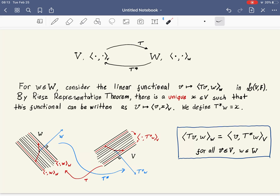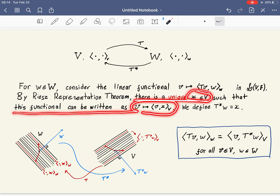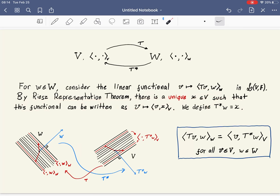And by Riesz Representation Theorem that we saw before, there is a unique vector x in V, such that this function now can be written like this. It maps a vector v into the inner product between v and x. This unique vector x that exists by Riesz Representation Theorem, we define T star w, where T star is the adjoint of T, to be x.